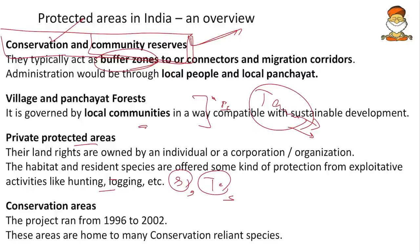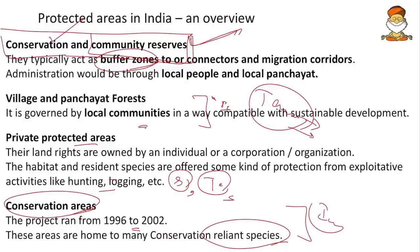Conservation areas are unique — basically an Indo-US partnership project that ran from 1996 to 2002. These areas are home to many conservation-reliant species — those which would go extinct without conservation support.